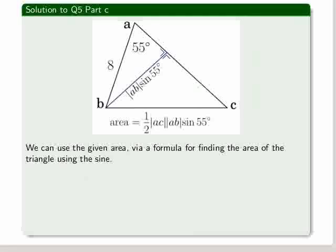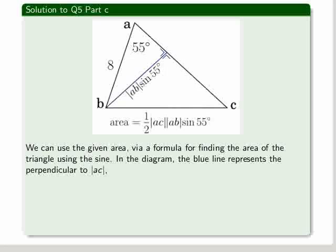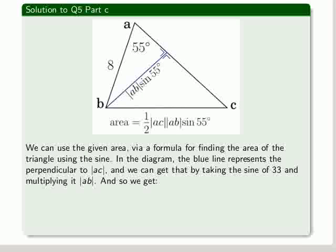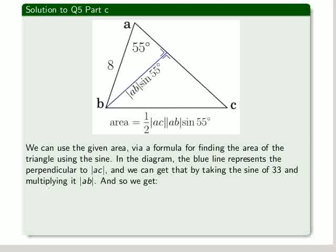We can use the given area via a formula for finding the area of the triangle using the sine. In the diagram, the blue line represents the perpendicular to AC, and we can get that by taking the sine of 55 degrees and multiplying it by AB.